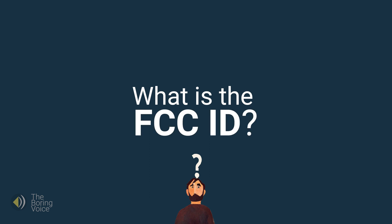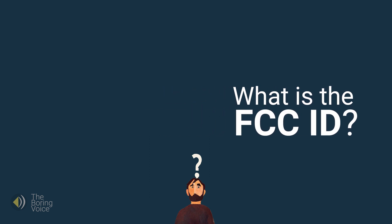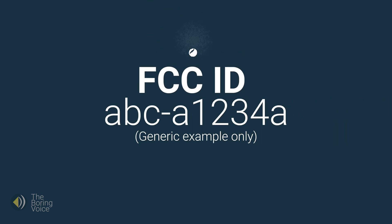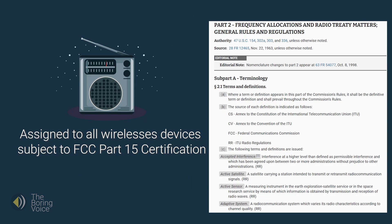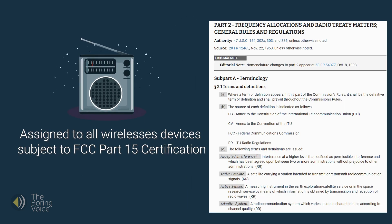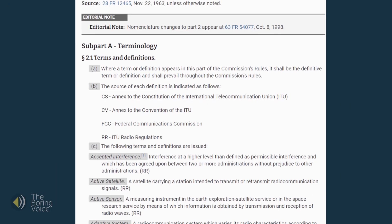What is the FCC ID? The FCC ID is a unique string of numbers and letters that is assigned to a specific wireless device to uniquely identify the manufacturer and the device. The ID is assigned to all wireless devices subject to FCC Part 15 certification.